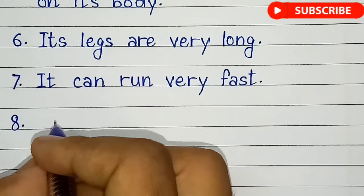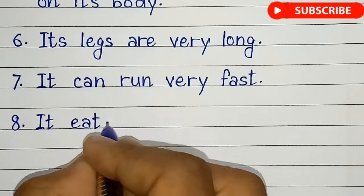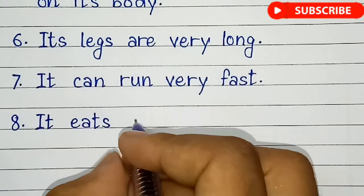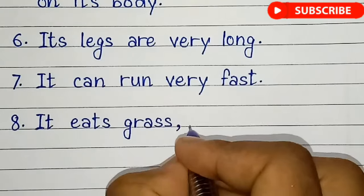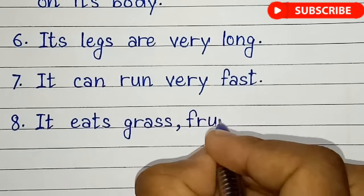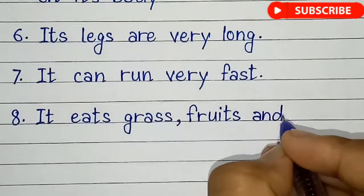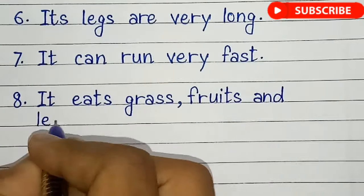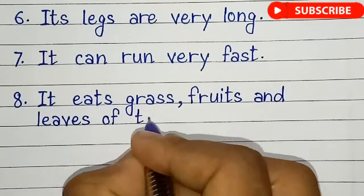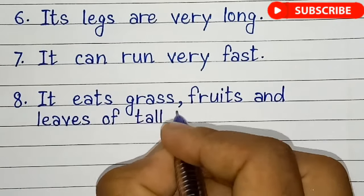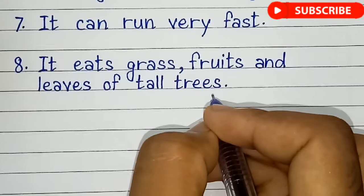Eighth line is, it eats grass, fruits and leaves of tall trees.